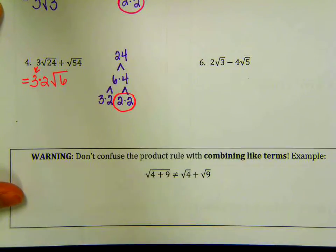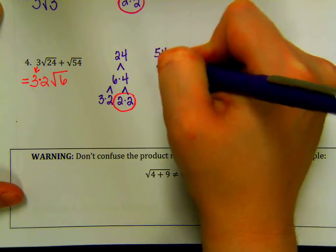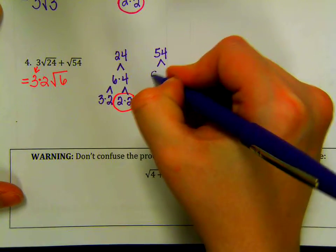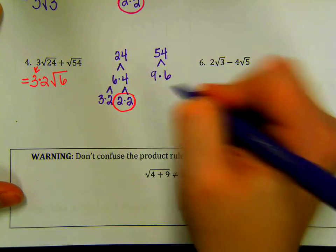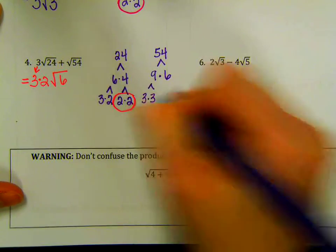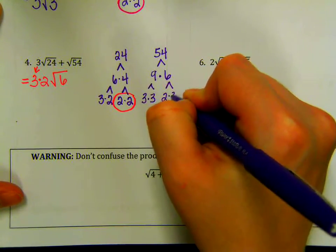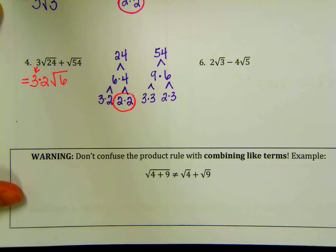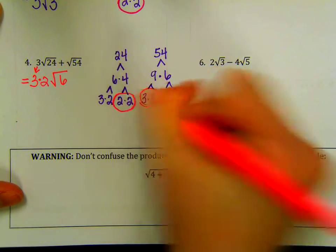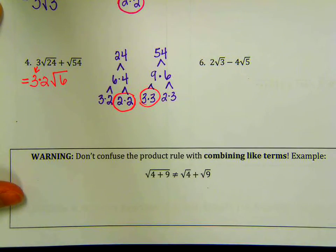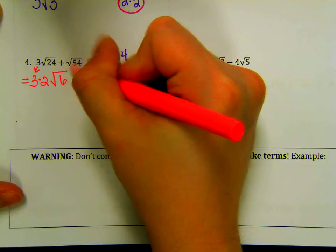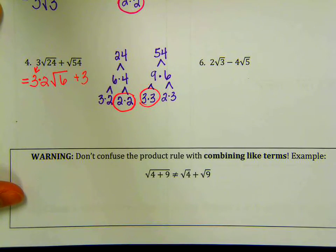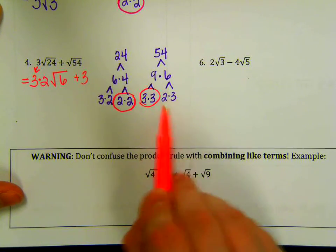So this 2 came from over here. The 3 came from right here. And then 3 times 2 is how I got the radical. Same thing for 54. How do you want to split up 54? 9 and 6. 9 and 6. And 9 I can split up into 3 times 3. 6 would be 2 times 3. Index is still 2, so I'm looking for groups of 2. So I will have plus, the 3 goes on the outside, and then write 6 because 2 times 3 is 6. That's going to be left over on the inside.